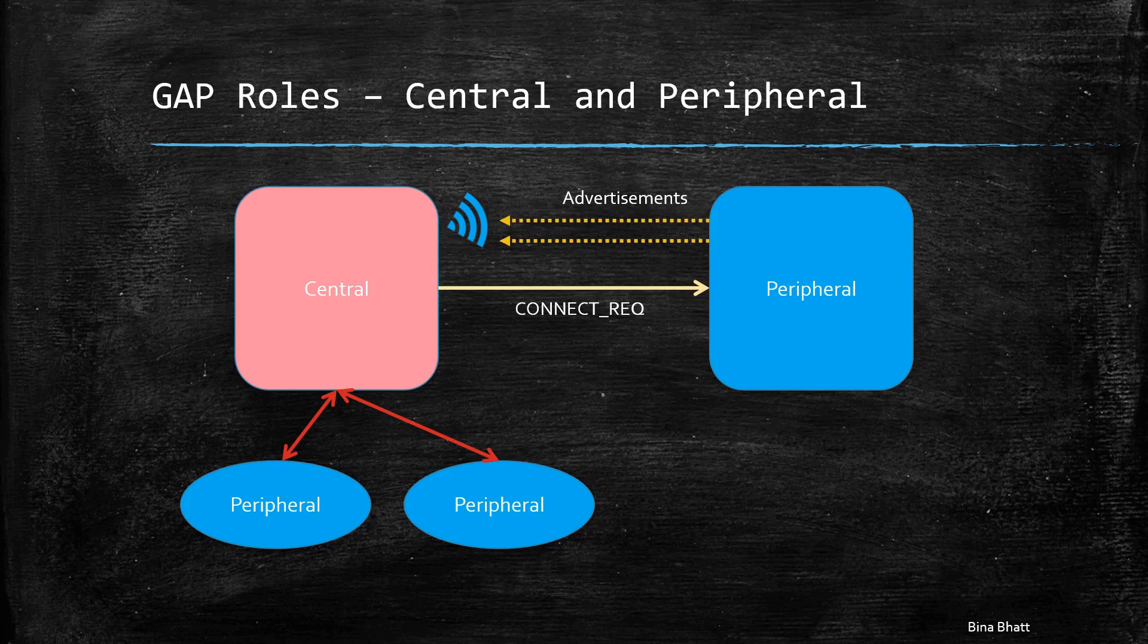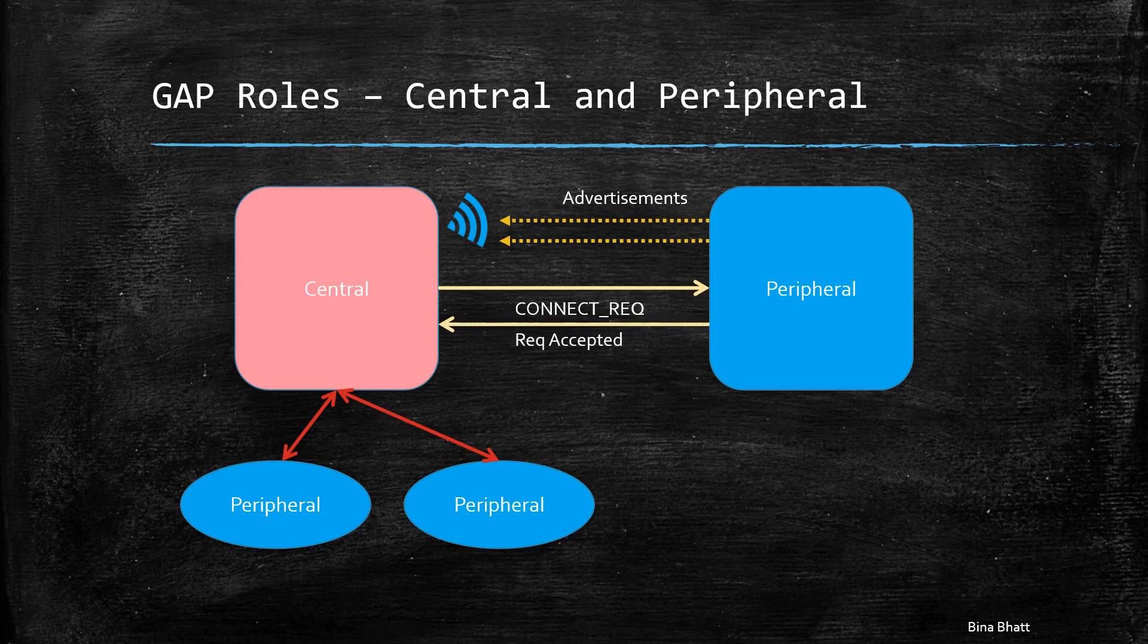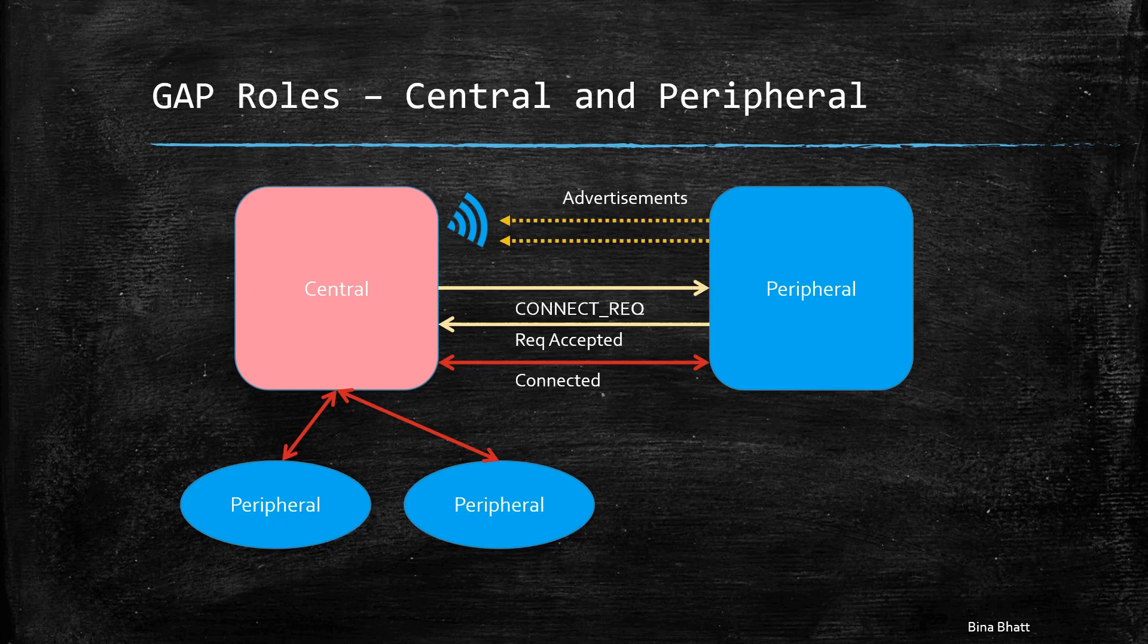If it is interested in forming a connection, the peripheral can accept or reject this request. And if it accepts the request, then a connection is formed between the central and the peripheral device.